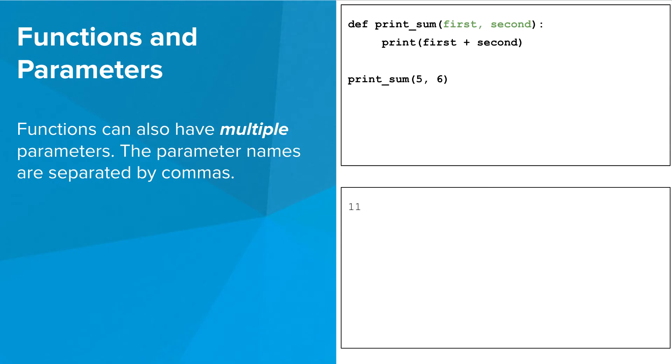Here's an example of a function with multiple parameters. The parameter names are separated by commas. When you call a function like this, you provide the arguments, in this case five and six, in parentheses, and separate them with commas.